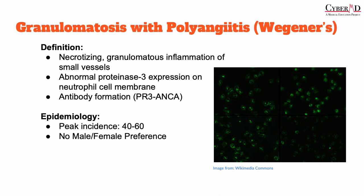PR3-ANCA, or proteinase 3-ANCA, is confusingly a C-ANCA. There is P-ANCA and C-ANCA. P-ANCA is perinuclear, while C-ANCA is cytoplasmic. When photos are taken of immunofluorescence, the P-ANCA will light up around the nucleus because it's perinuclear, while C-ANCA lights up the border of the cell in the cytoplasm near the cell membrane. Remember that PR3-ANCA is actually a type of C-ANCA, especially when discussing immunofluorescent results.